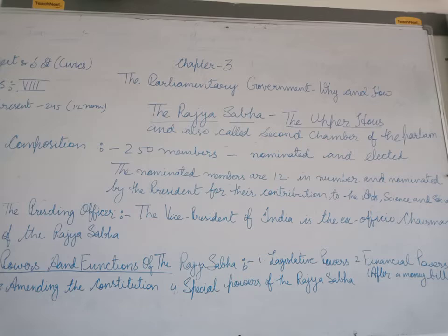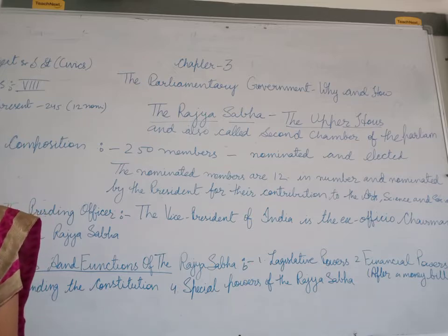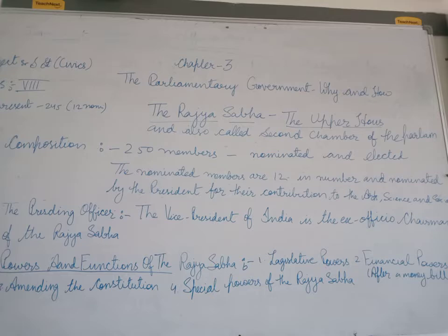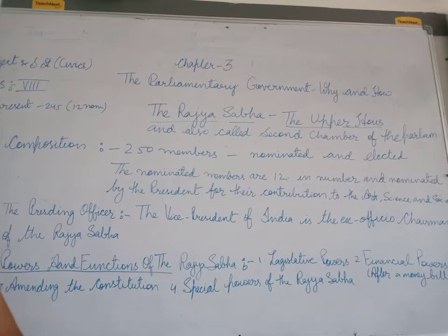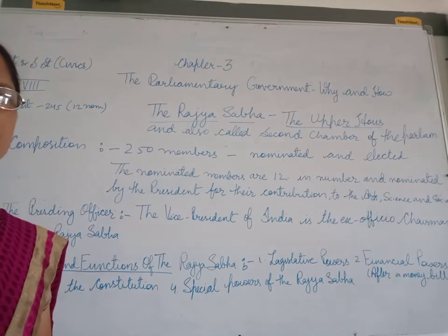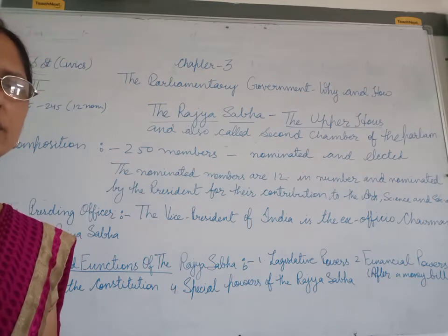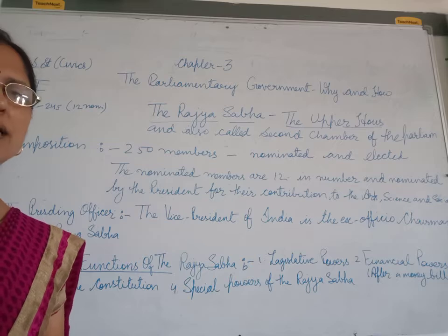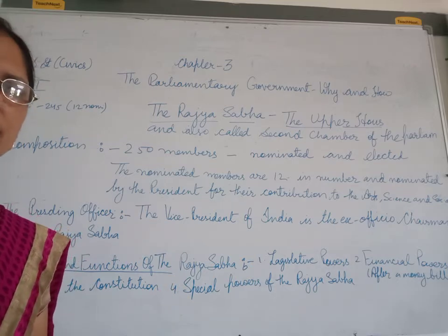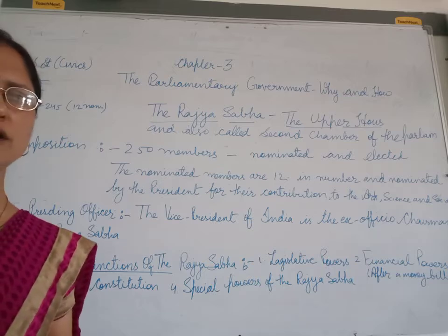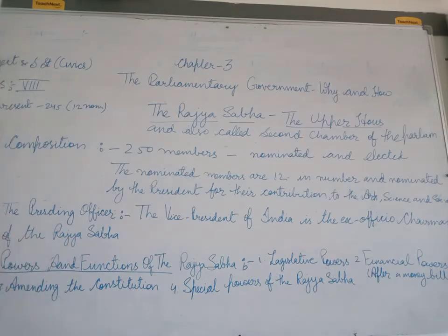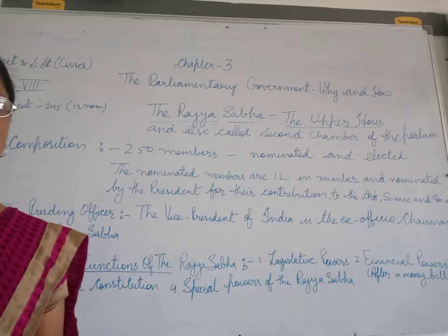Money bills can only originate in the Lok Sabha. After a money bill has been passed by the Lok Sabha, it is sent to the Rajya Sabha for its recommendation. That is, the Lok Sabha passes the money bill, and it is then discussed in the Rajya Sabha. After discussion there, the members of Rajya Sabha recommend it, after which it goes to the Vice President and finally to the President. So just remember — money bills are not made by the Rajya Sabha.